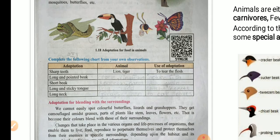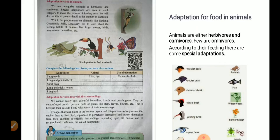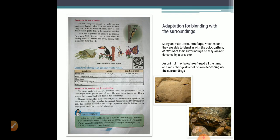Adaptation for blending with the surroundings. We cannot easily spot colorful butterflies, lizards and grasshoppers. They get camouflaged amongst grasses, parts of plants like the stem, leaves, flowers, etc. That is because their colors blend with those in the surroundings. In the slide, you can see there is a fish here, but it is blended so well with the sand that you cannot easily spot it. Similarly, there is a spider which is blended with the surroundings. This is called camouflage.